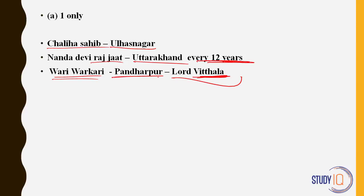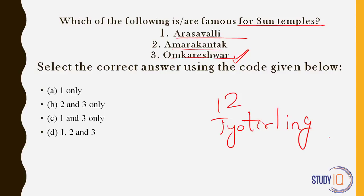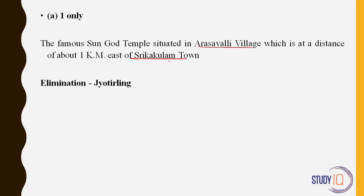Another question from art and culture: which place is famous for a Sun Temple? Options were Arsavali, Amarkandak, and Omkareshwar. This question could be solved using elimination. If you know Omkareshwar, it is one of the 12 Jyotirlingas in India — temples of Lord Shiva — located in Madhya Pradesh. So it cannot be a Sun Temple. You can directly eliminate three options and your answer is one. Arsavali is a village near Srikakulam in Andhra Pradesh. So the answer was one only, using the Jyotirlinga elimination method.